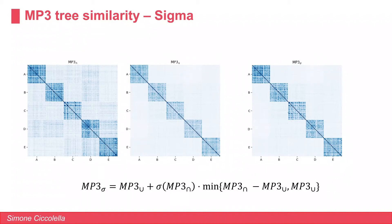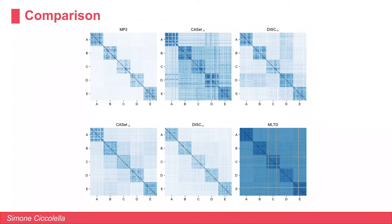MP3-sigma is able to distinguish between groups as well as the union function, and also to characterize intra-group similarity as well as the intersection. Comparing with previously mentioned measures — CASETTE, DISC, and MLTED — where CASETTE and DISC both have intersection and union variants, we can see that MP3 is the measure able to fully divide between inter- and intra-group across five different types of group phylogenies shown on the diagonal.